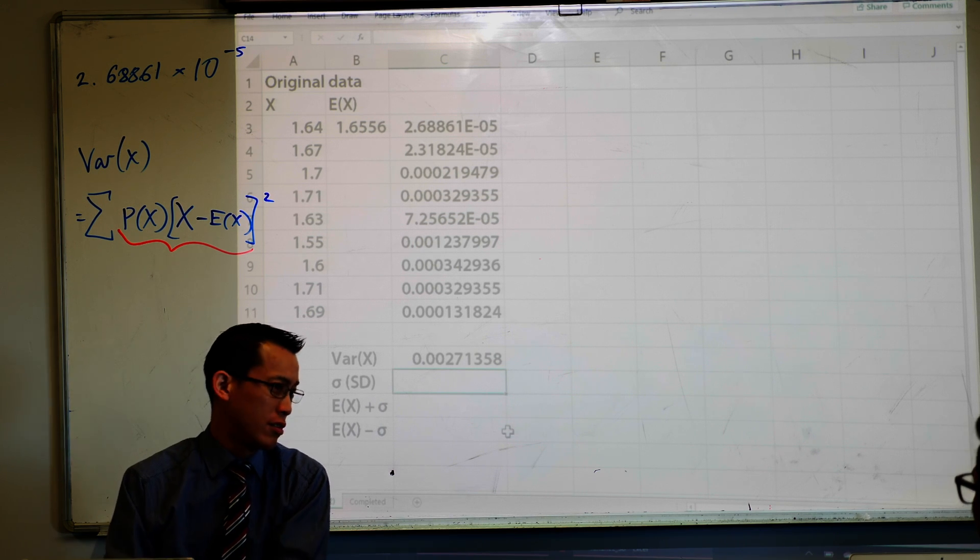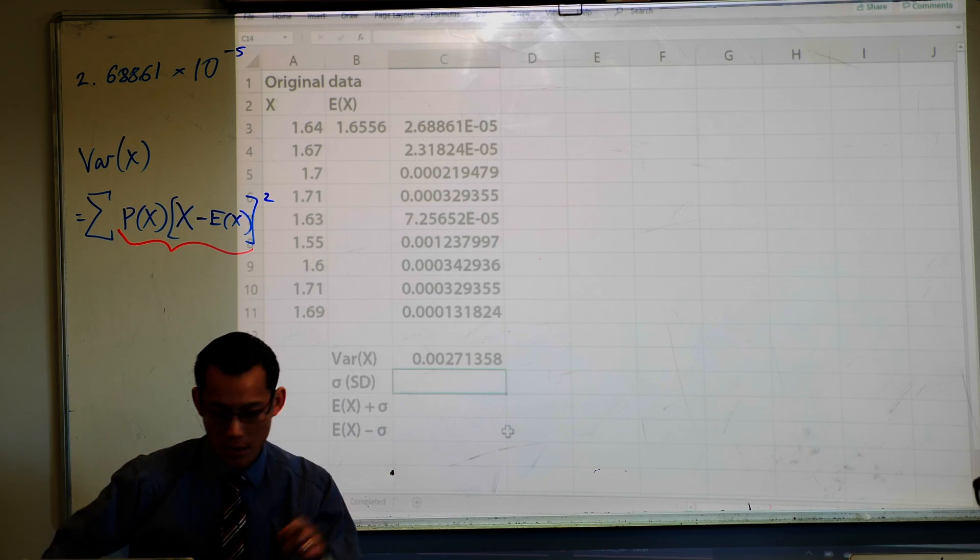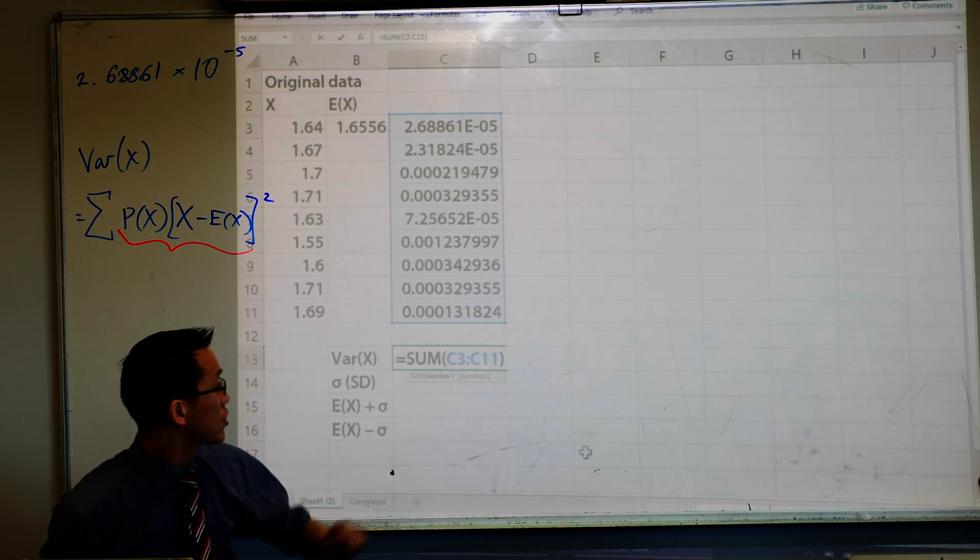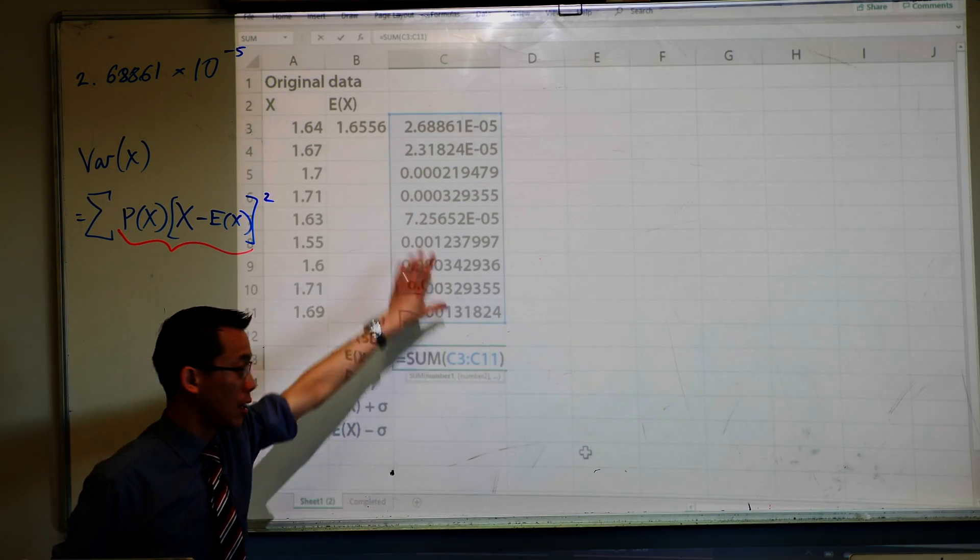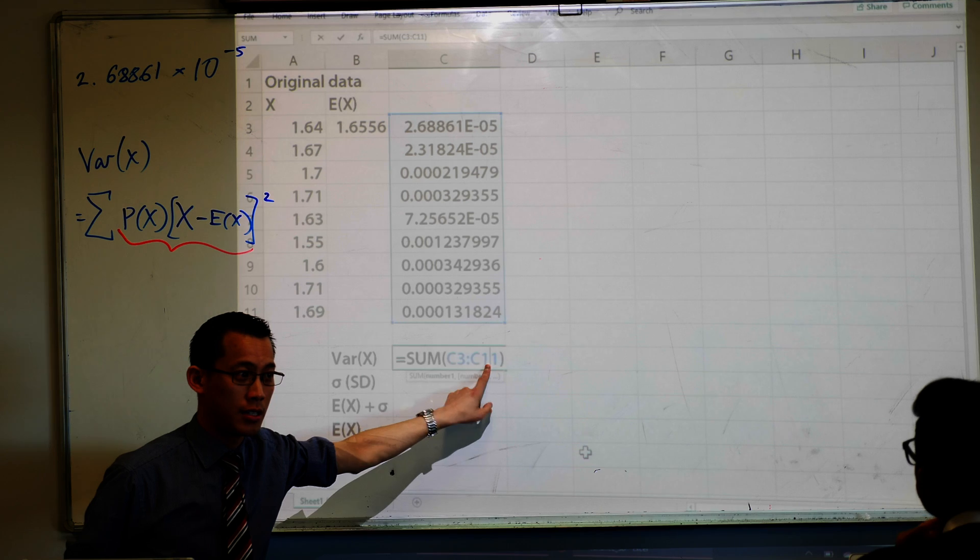So we usually do this by hand. That one just there? That was just adding up all of these blue values here. So there's my sum, there's the cells that describe it.